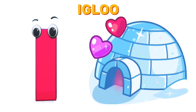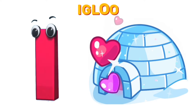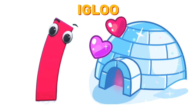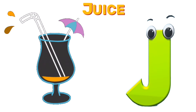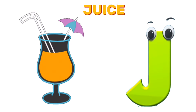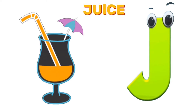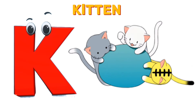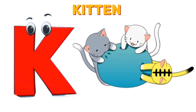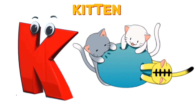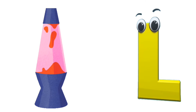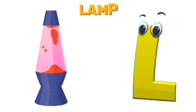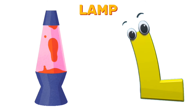I is for igloo. Igloo. J is for juice. Juice. K is for kitten. Kitten. L is for lamp. Lamp.